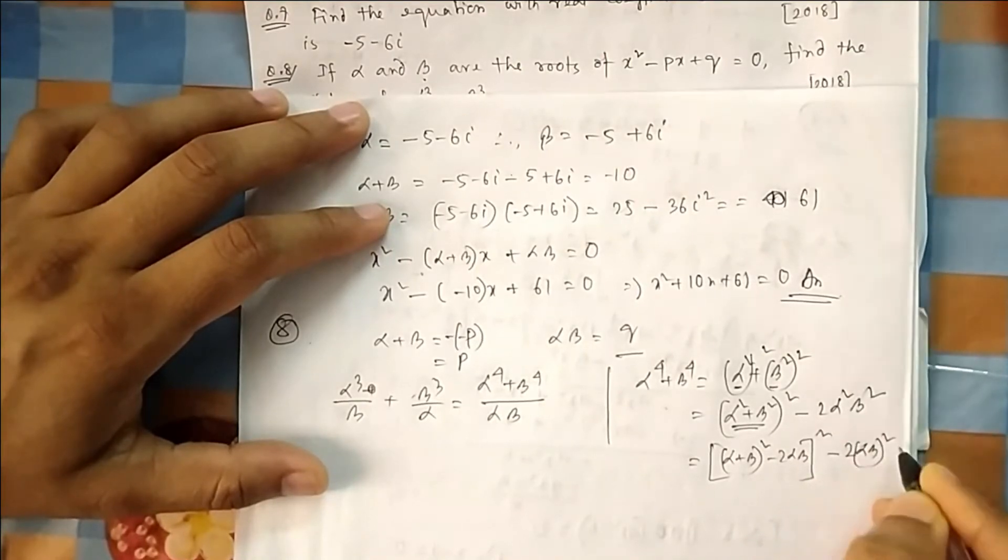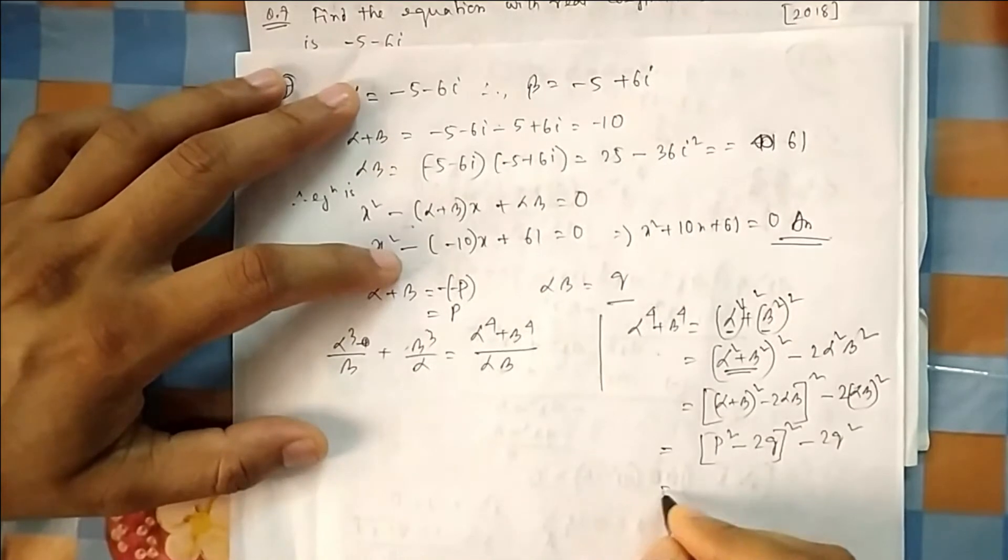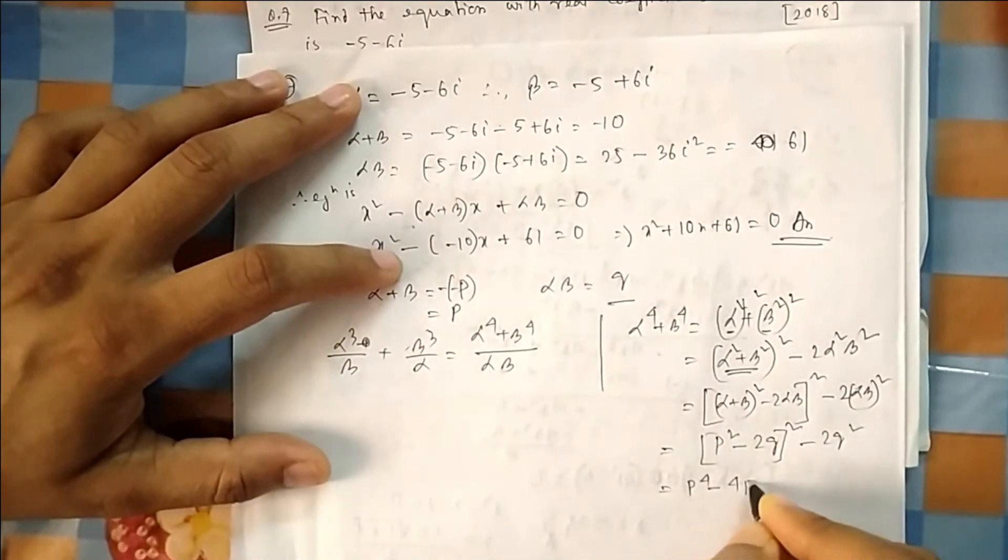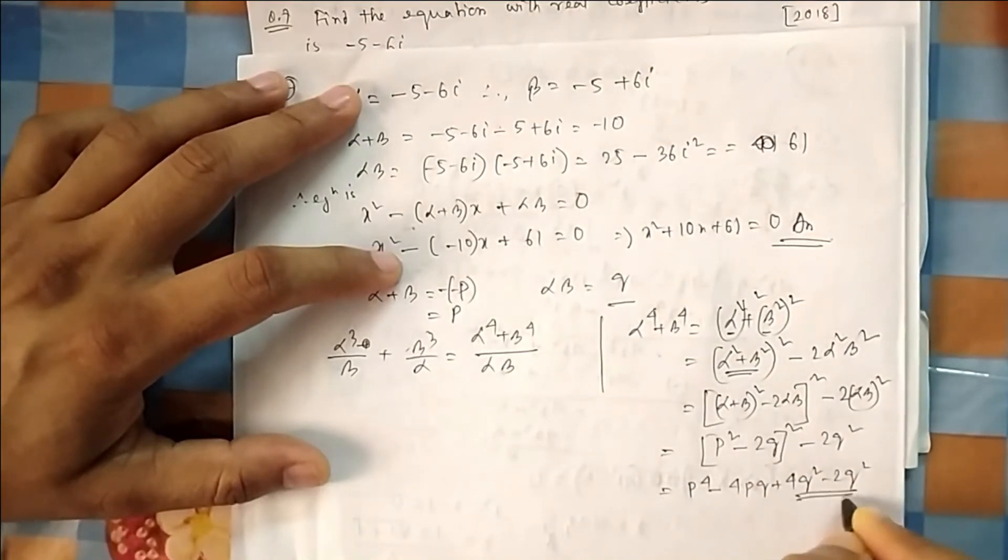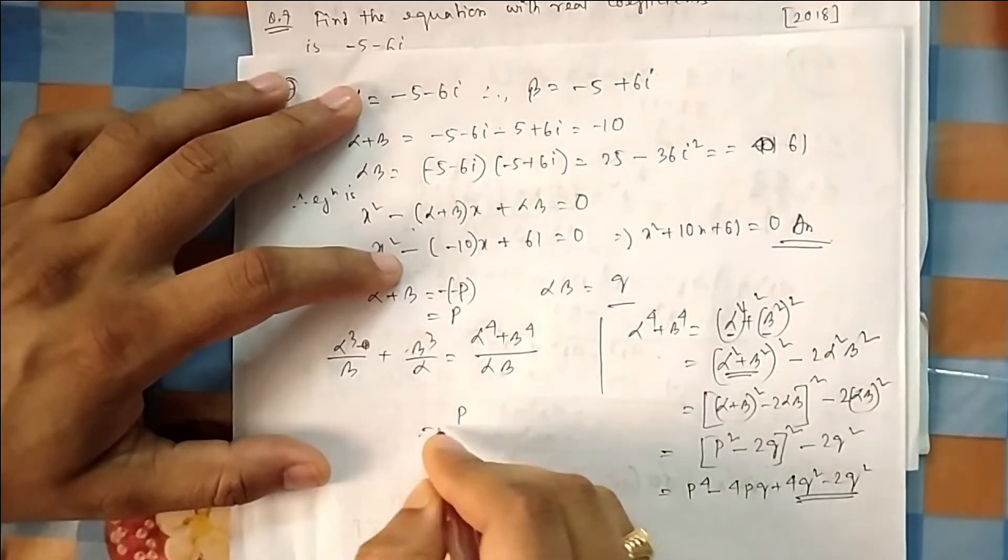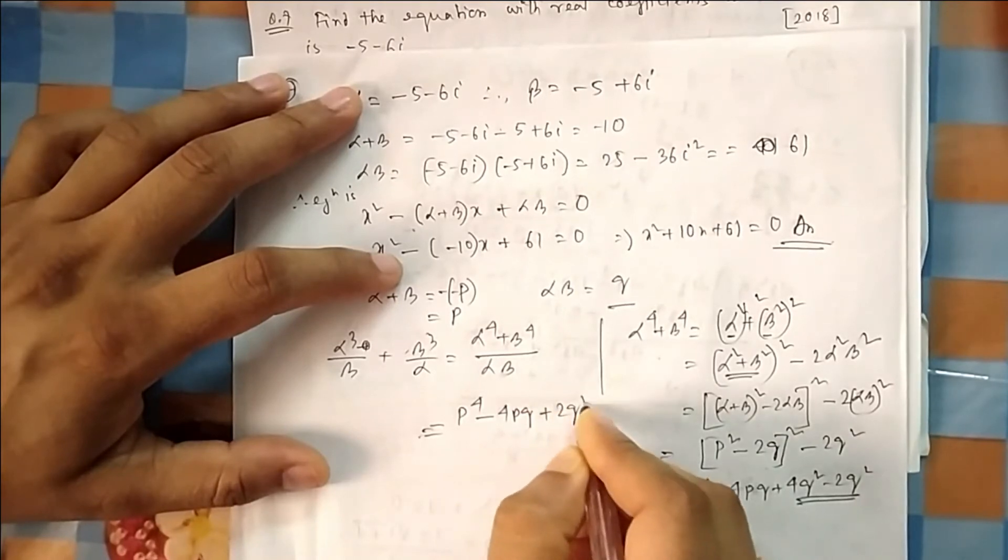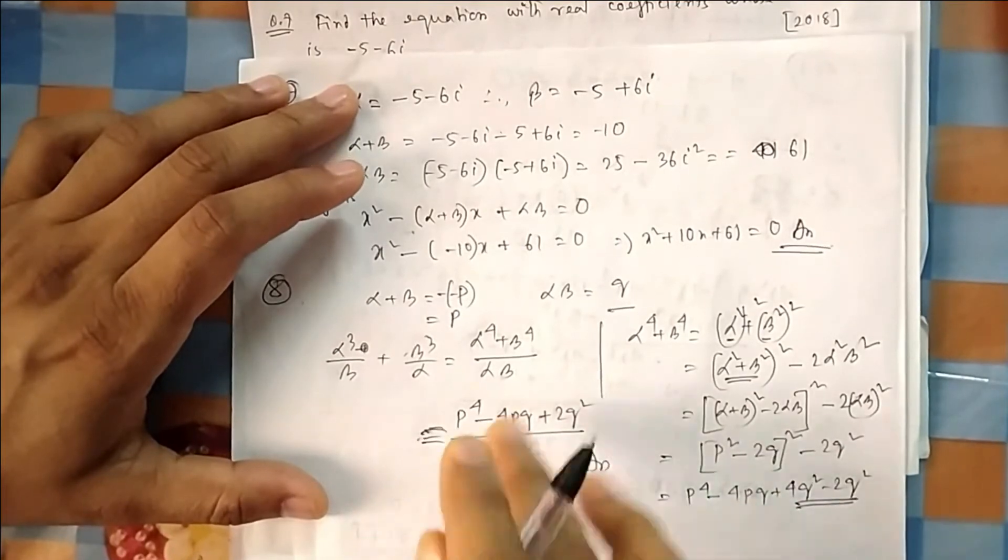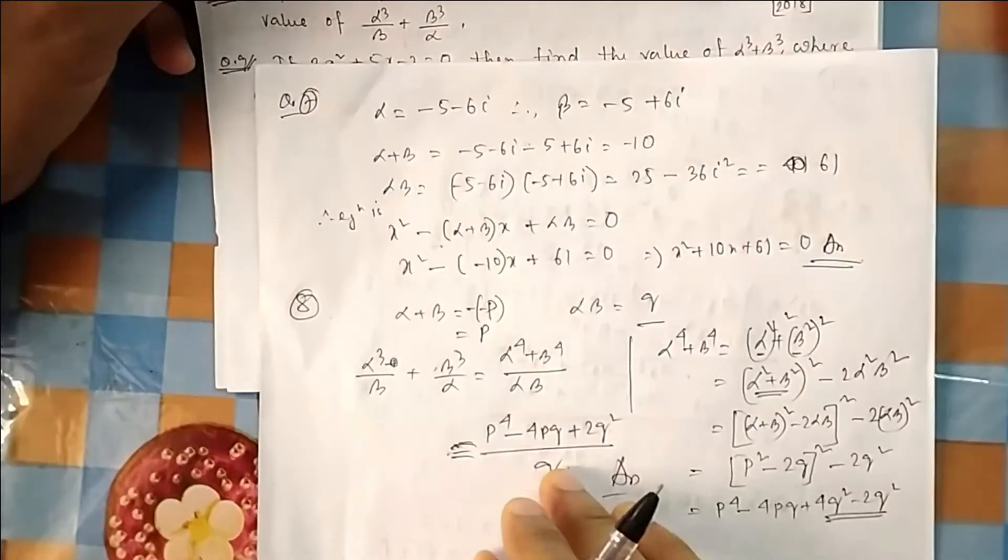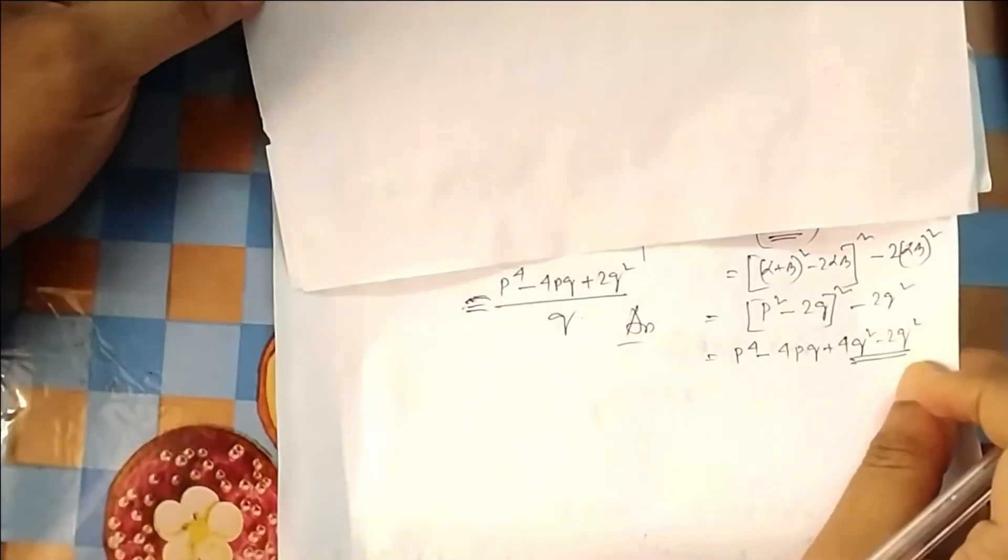So if you put the value, α+β is p, so it is (p² - 2q)² - 2q². So it will be p⁴ - 2p²... q² will give you... so you will directly put it here. This is the expression I need: p⁴ - 4p²q + 2q². And what is αβ equal to q? So this is your expression, this is your answer. This is the expression they want to find. This is the value of α³/β + β³/α.